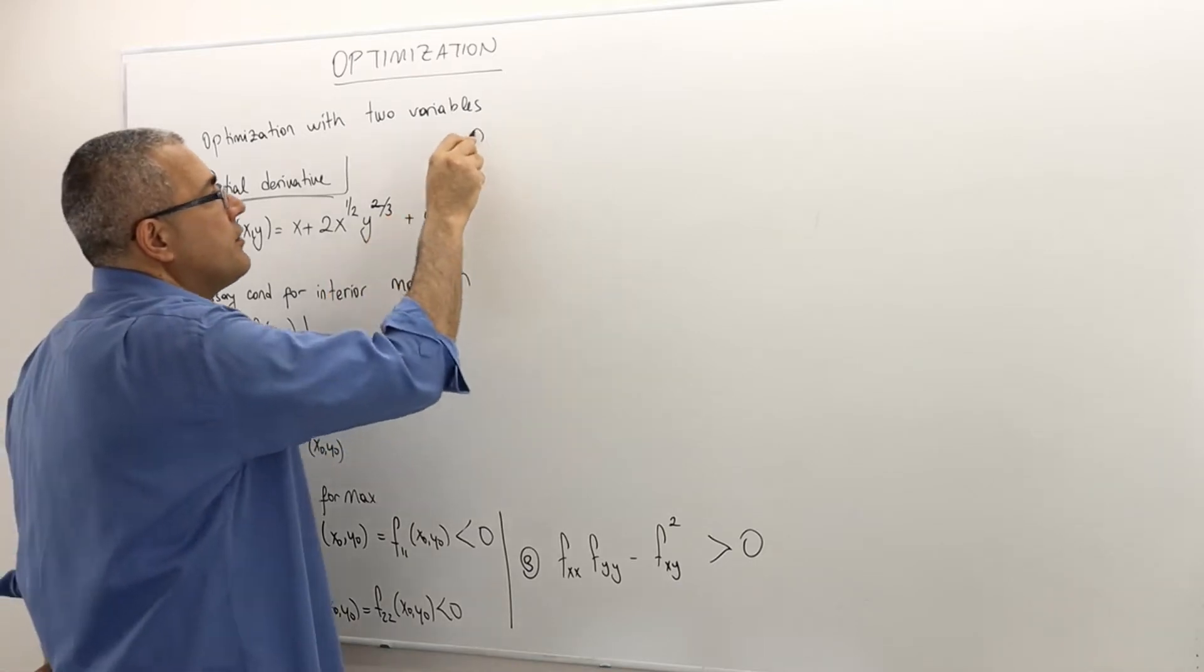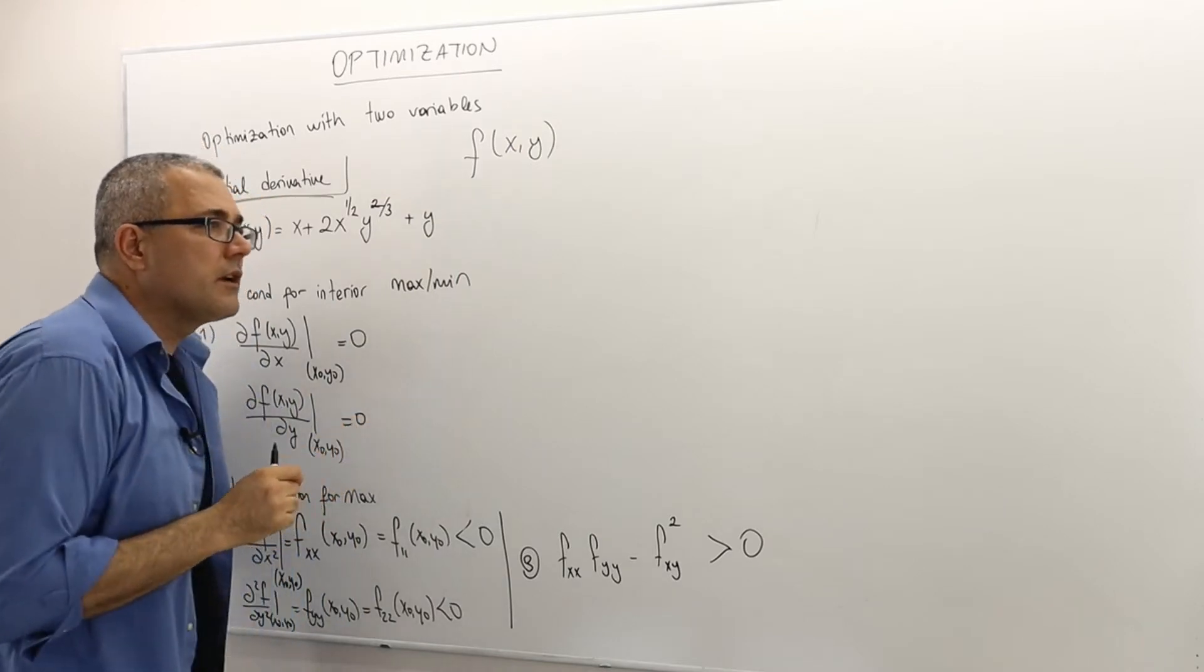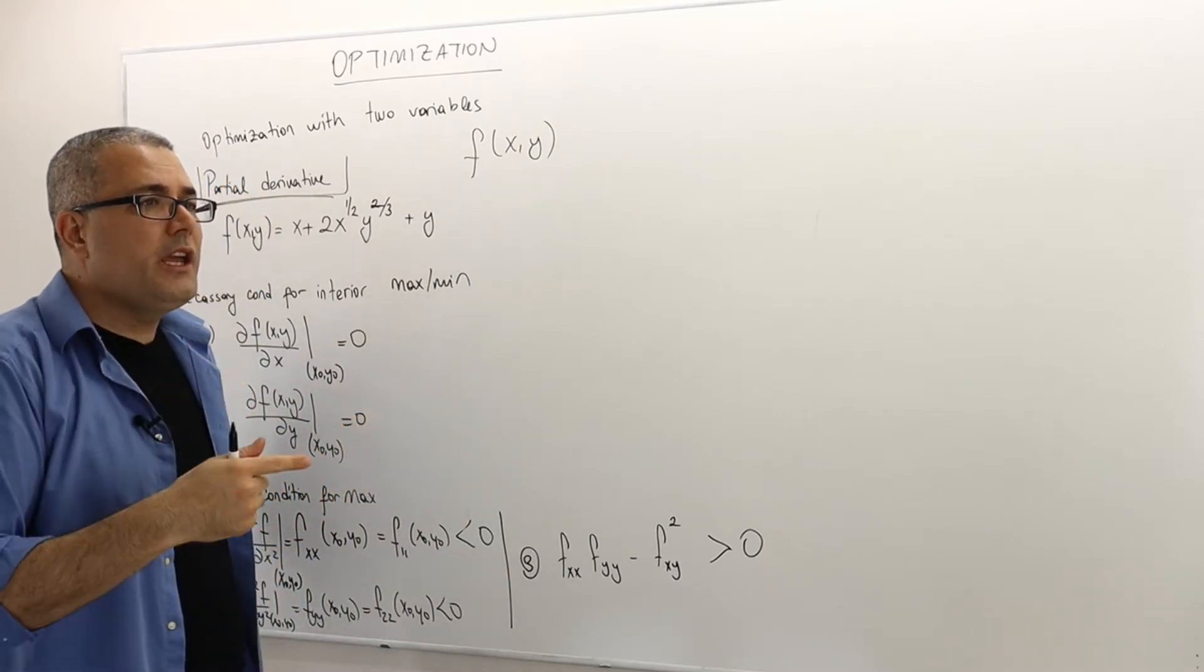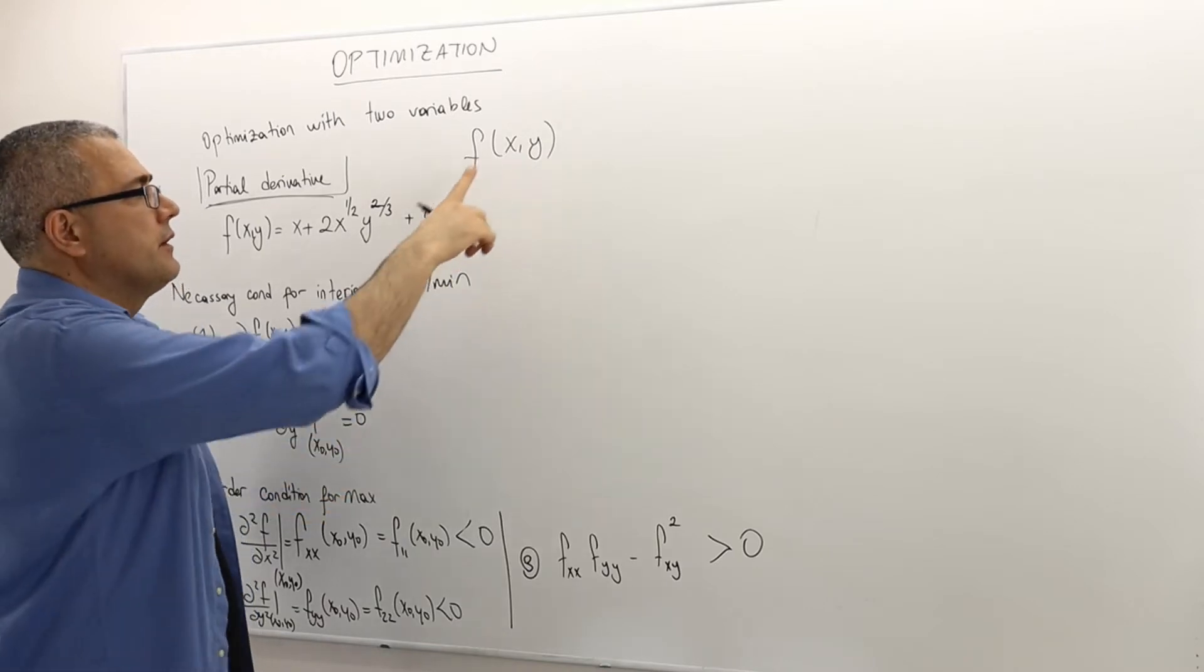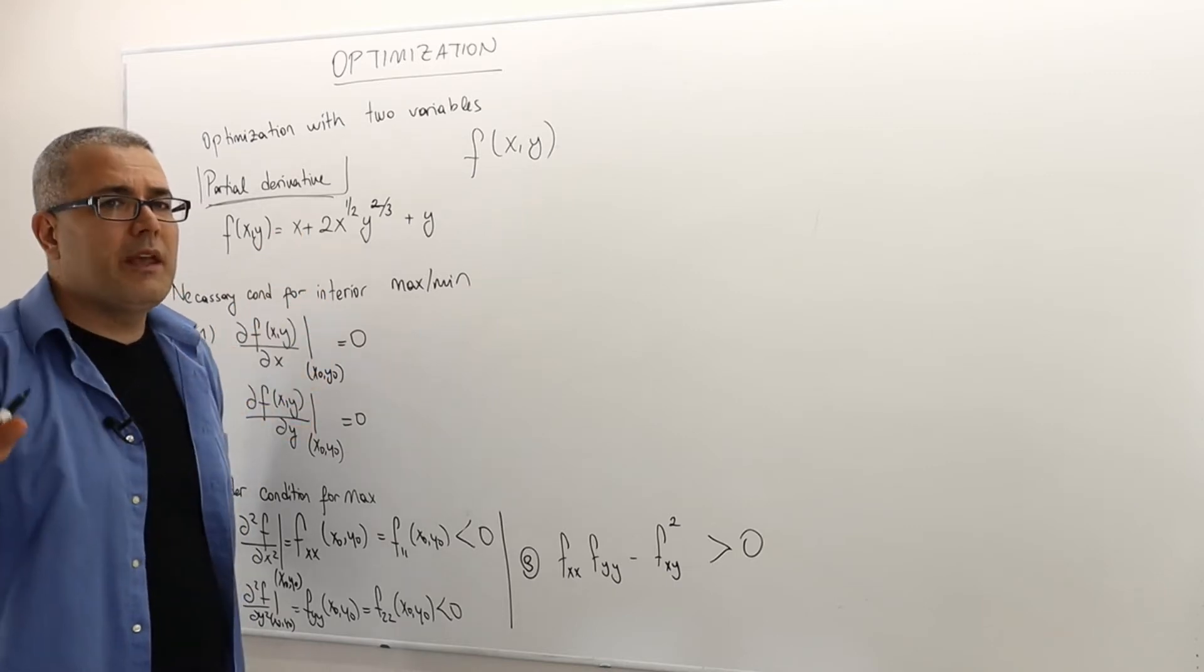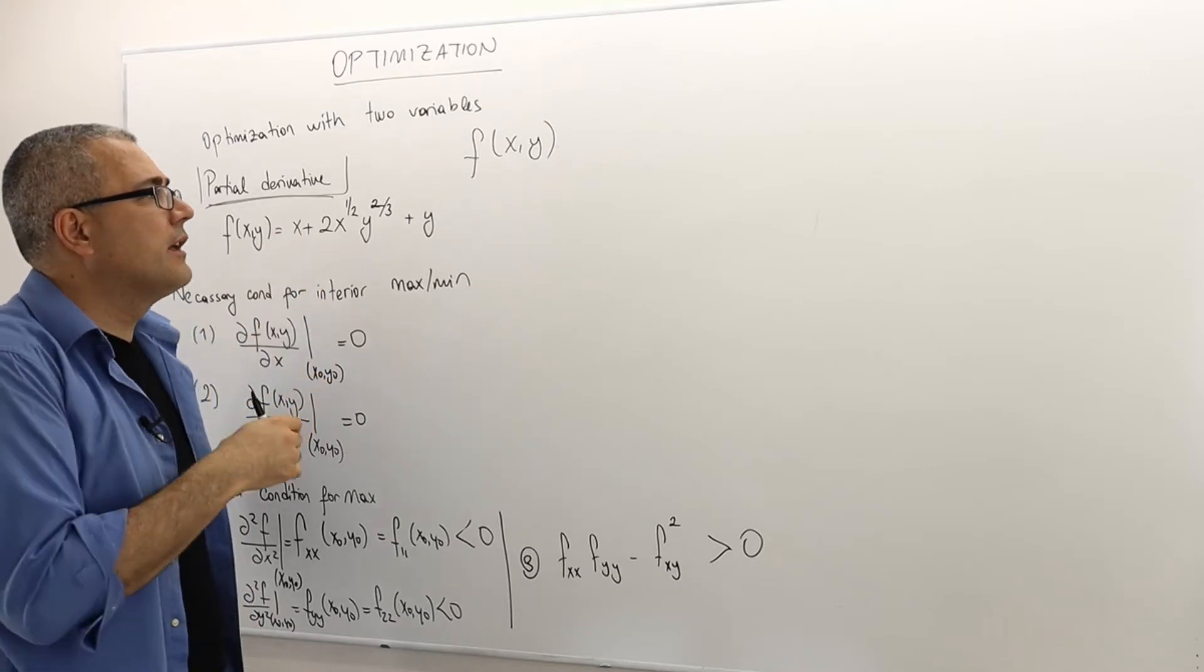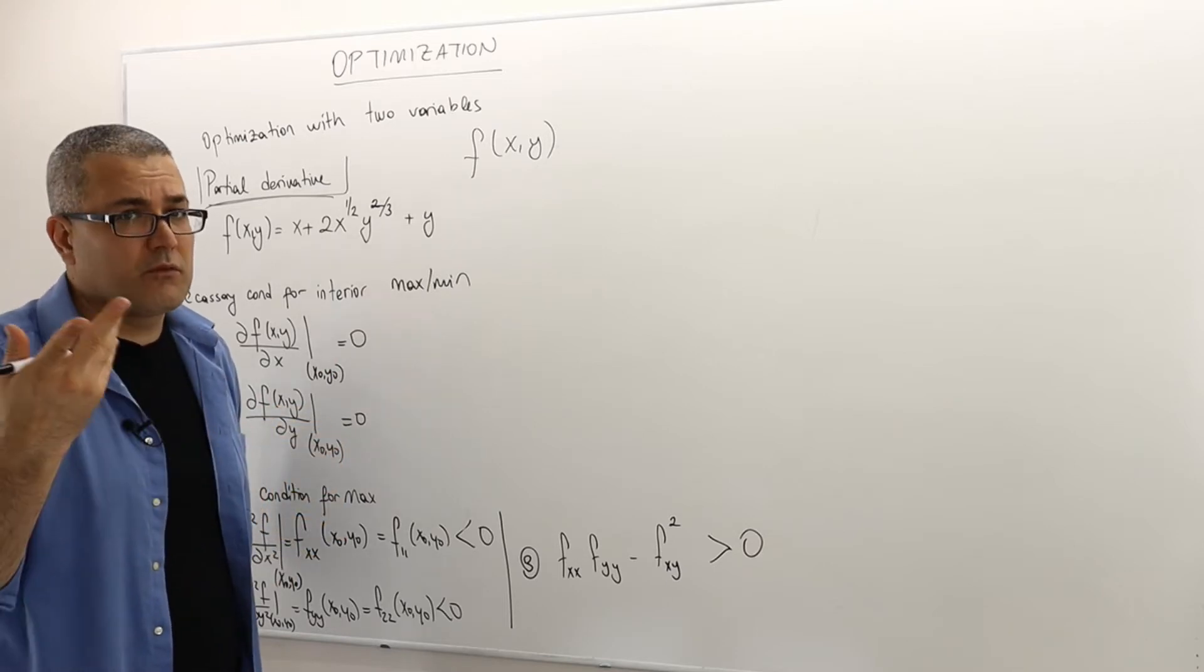But when I have a function with two variables, let's say x and y, here the change in which variable, because there are two of them. So I can change x while keeping y fixed, and I can change y while keeping x fixed, or I can change both.